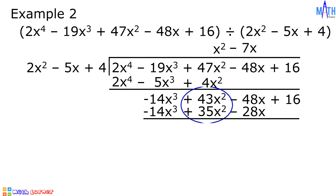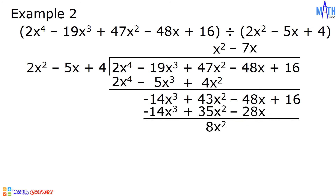Let us subtract. 43x squared minus 35x squared equals 8x squared. Negative 48x minus negative 28x equals negative 20x. Then let us bring down 16.